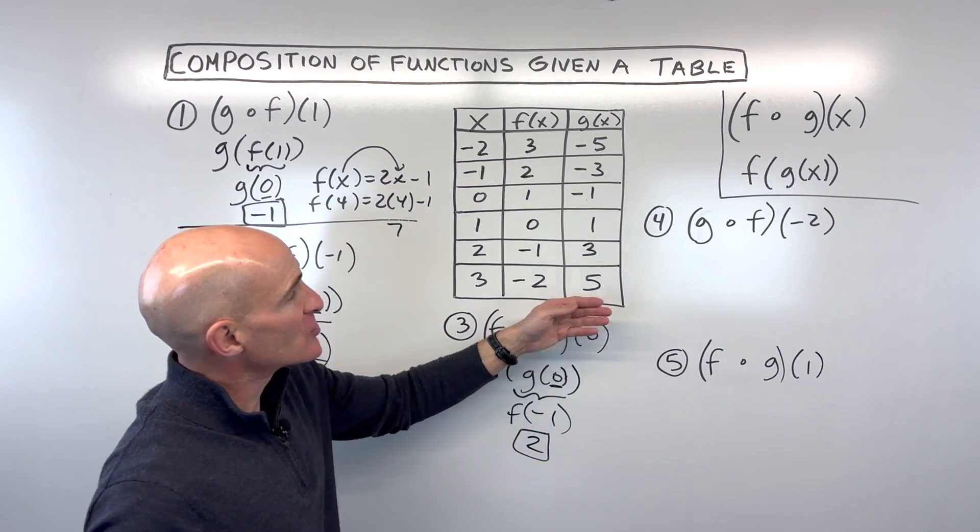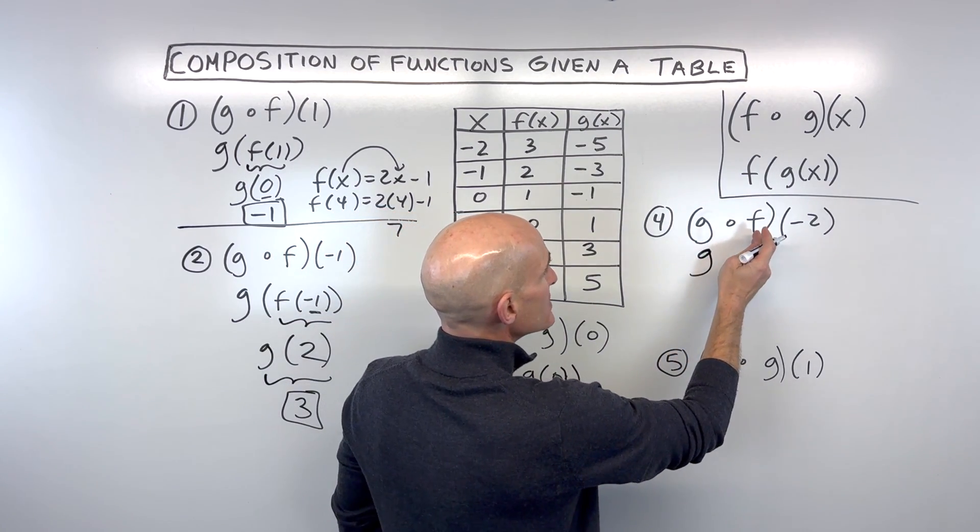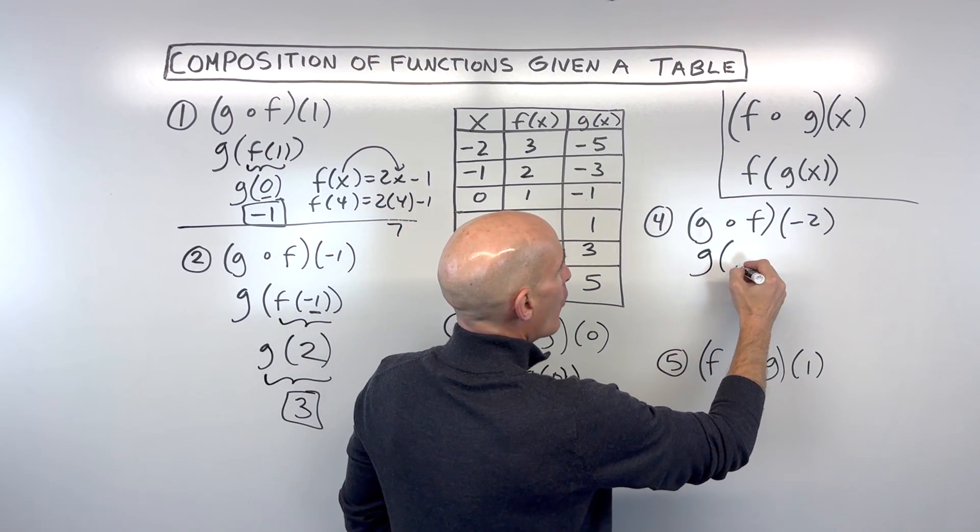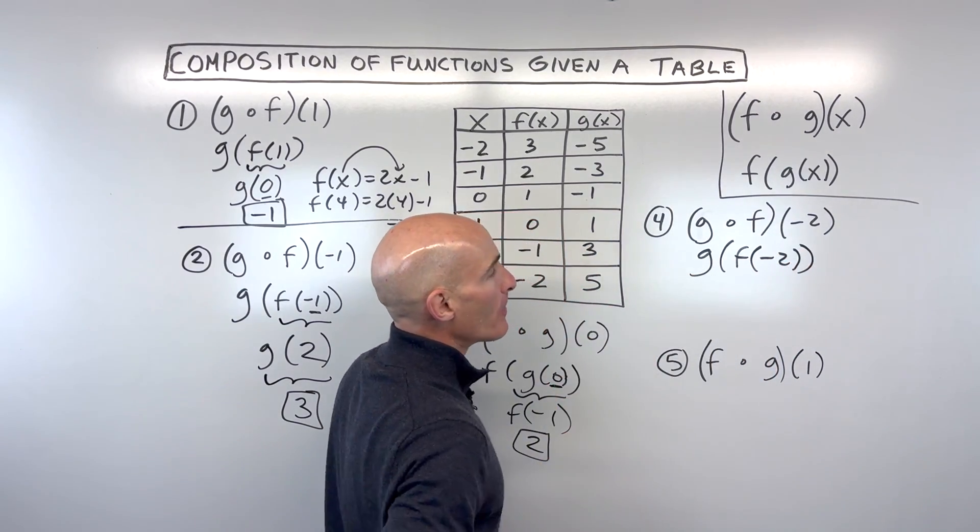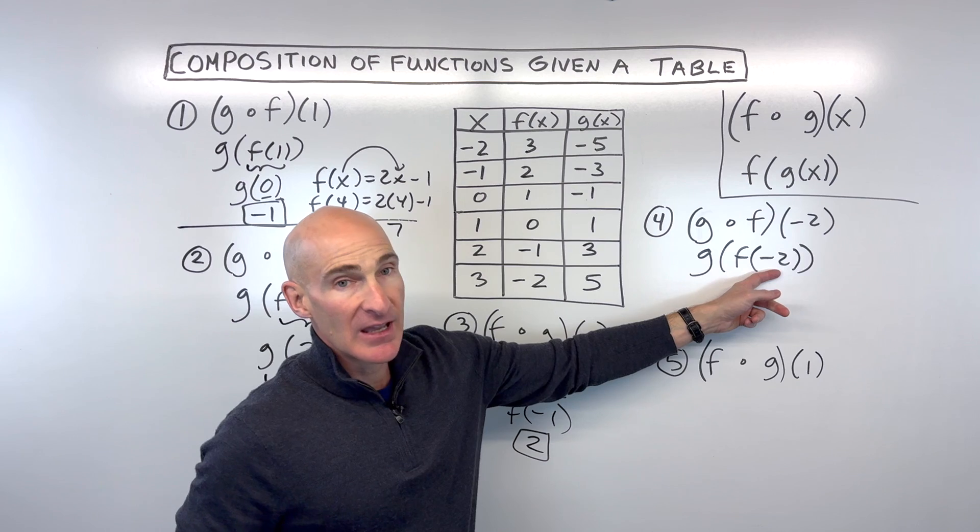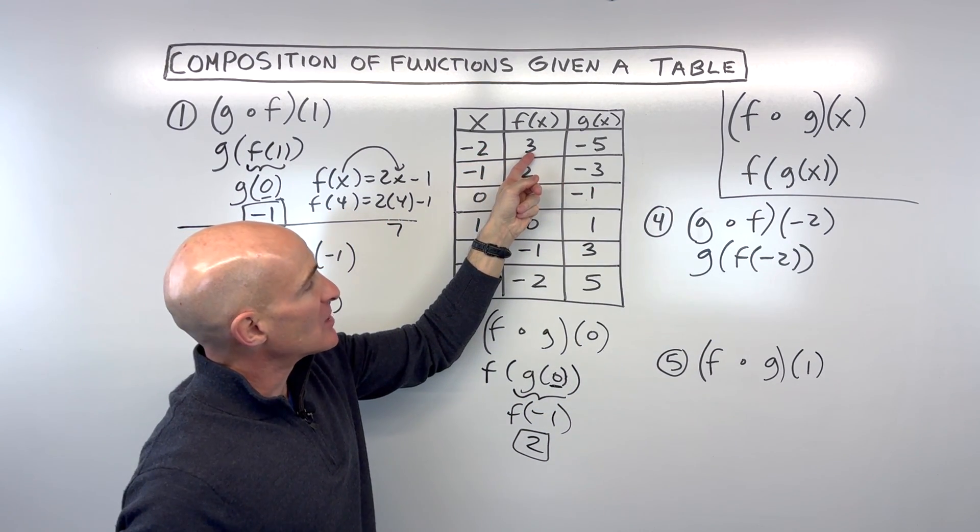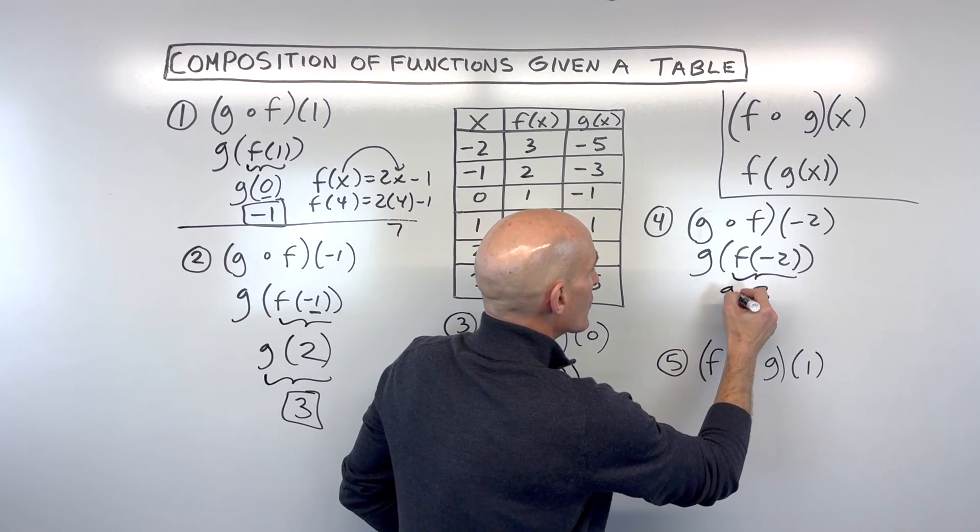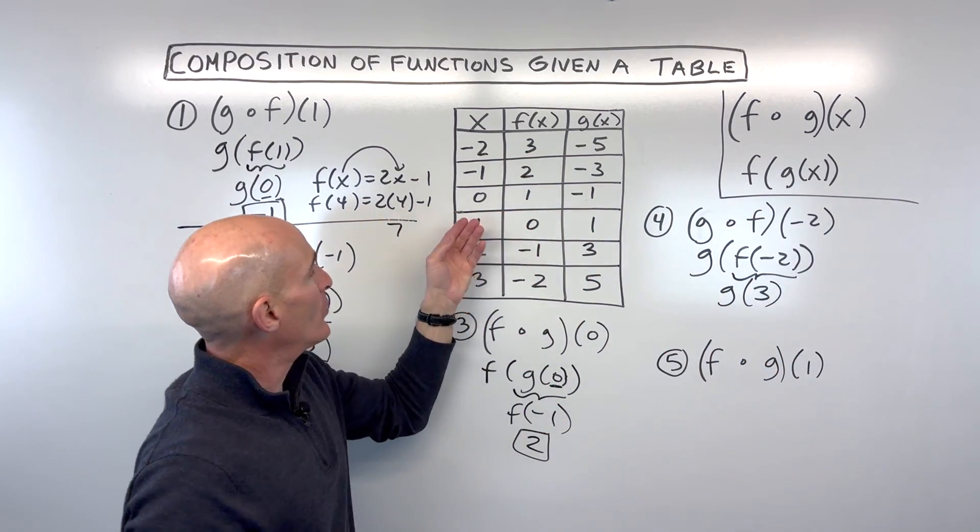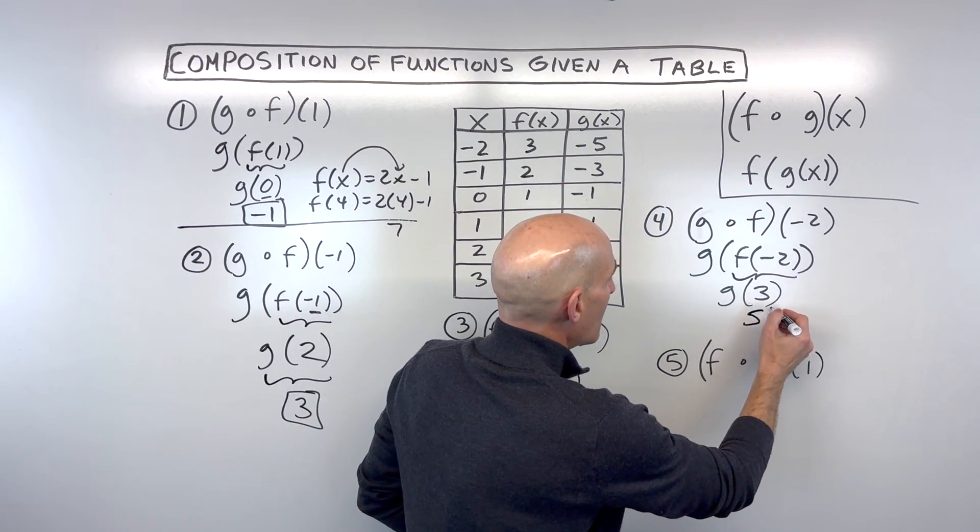Two more—see if you can try these. Number four: g of f of negative two. Again, the order is important. It's like working from right to left, or in my preferred notation, from the inside out. So f of negative two: negative two is our input, and our output is three for our f function. Now we go to our g function. If three is the input, what's the output for g? It's five. And we solved it.